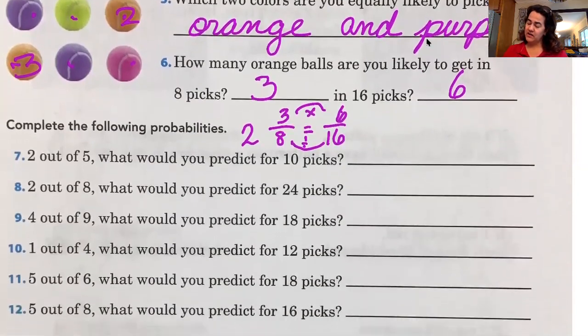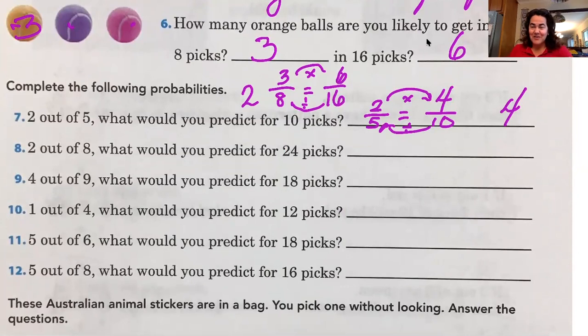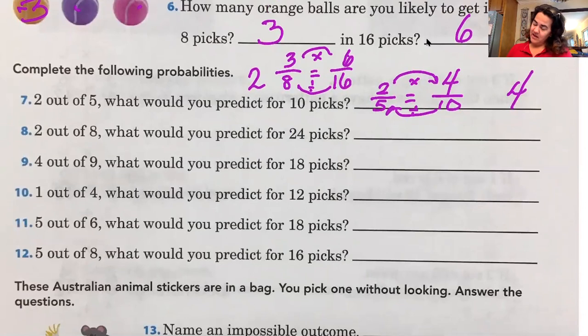Now, two out of five, what would you predict for 10 picks? So if I got two out of five is equal to how many out of 10? Again, do our backwards C. We're going to go this way and divide. We're going to go this way and multiply. So 10 divided by five is two. Two times two is four. So our answer there should be four. Right on. How are you feeling second graders? You're doing great. Stay with me a little bit longer. We're almost done.